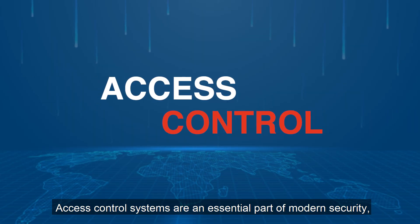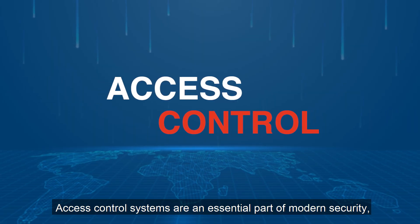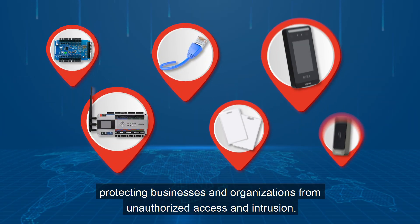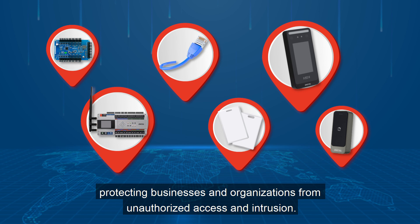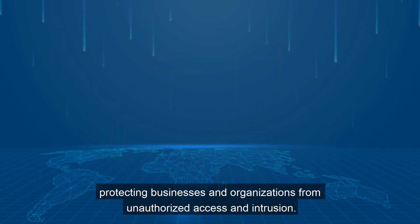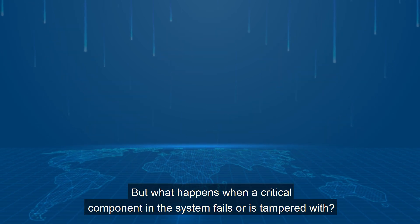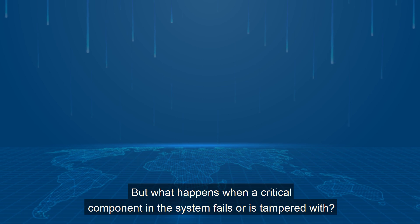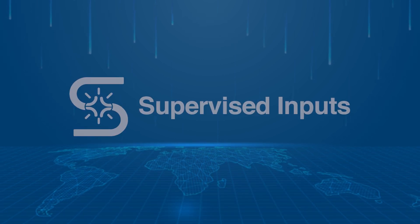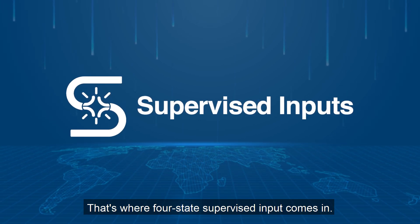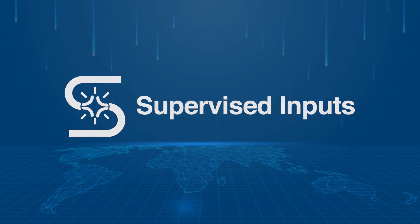Access control systems are an essential part of modern security, protecting businesses and organizations from unauthorized access and intrusion. But what happens when a critical component in the system fails or is tampered with? That's where four-state supervised input comes in.